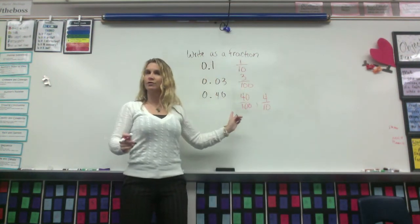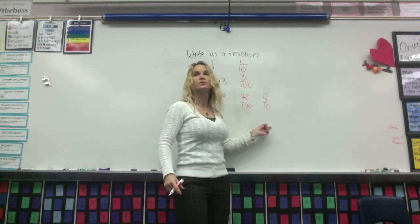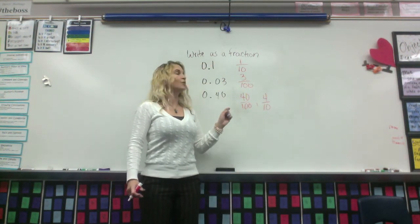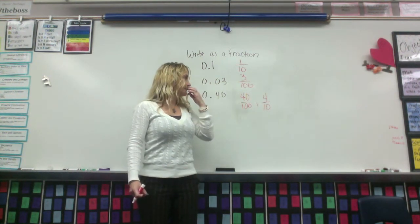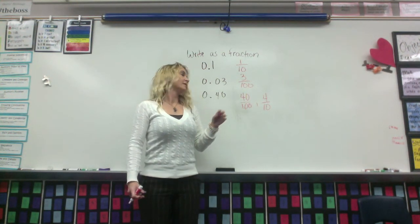Okay, so who's wrong? They're not the same fraction. Who's wrong? Neither. Neither. Why are neither wrong? Four-tenths is simplified as four-tenths, and forty-hundredths is simplified to four-tenths.